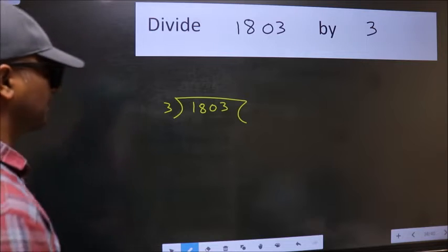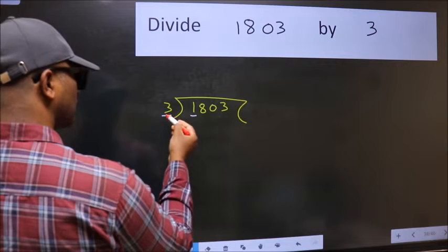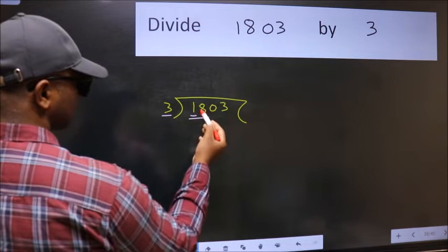Next, here we have 1 and 3 here. 1 is smaller than 3, so we should take 2 numbers: 18.